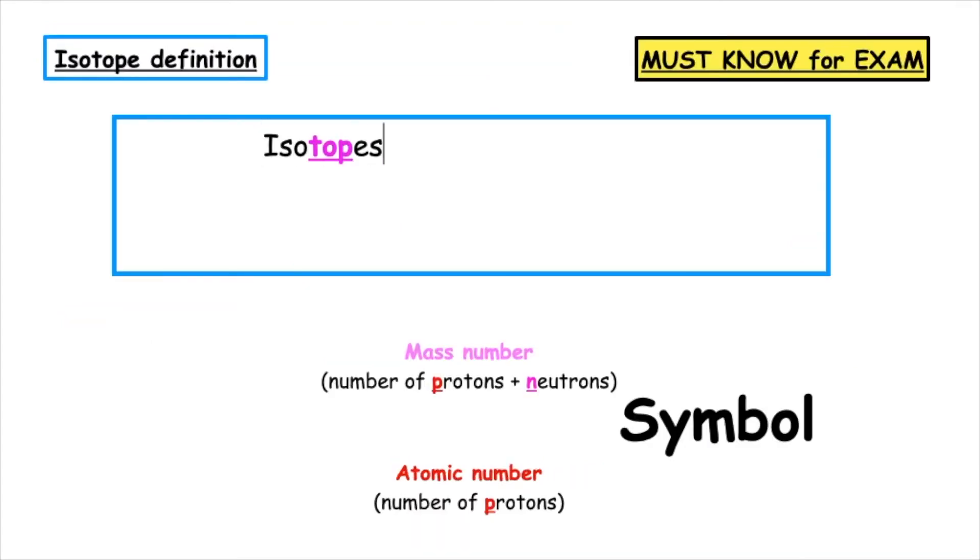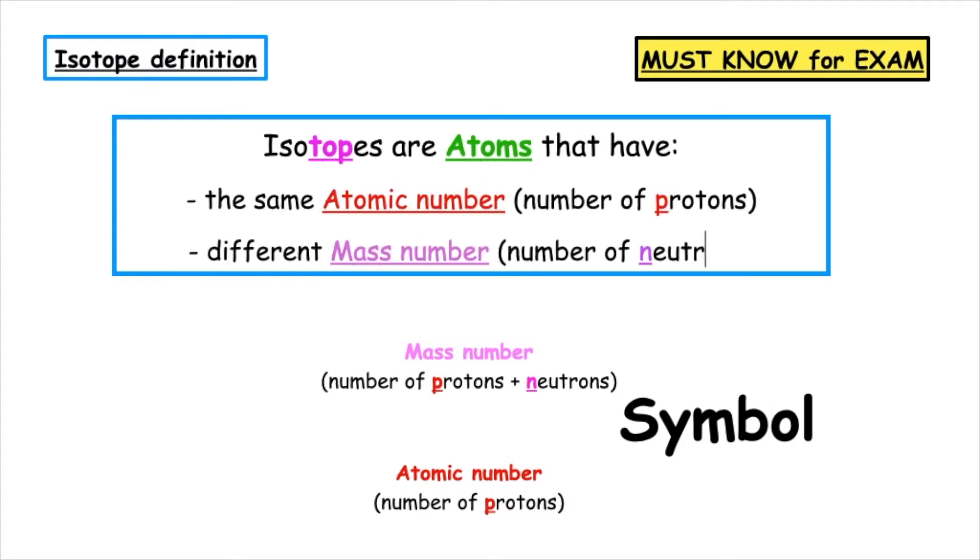Isotopes are atoms that have the same atomic number, meaning they have the same number of protons, and a different mass number, so therefore a different number of neutrons. A quick way to remember this is the word top is in isotope because the top number is different.